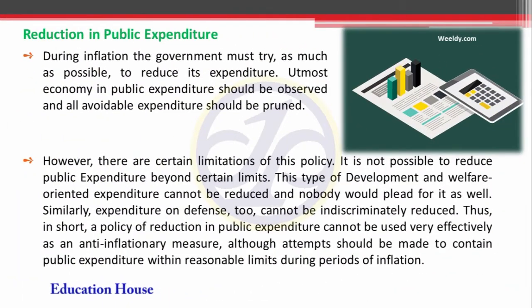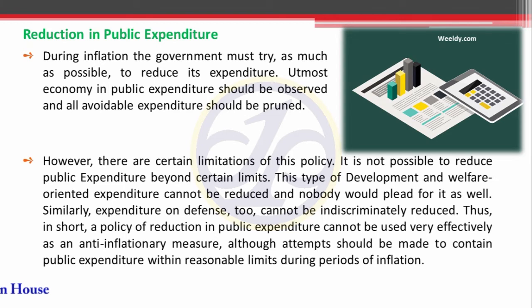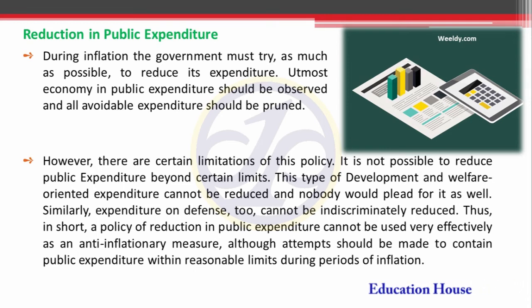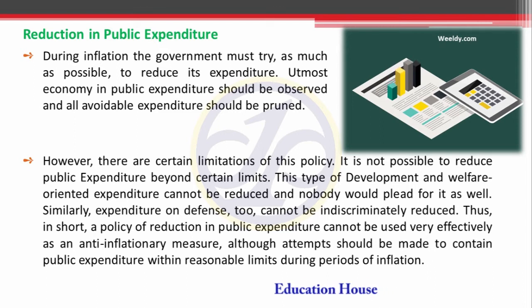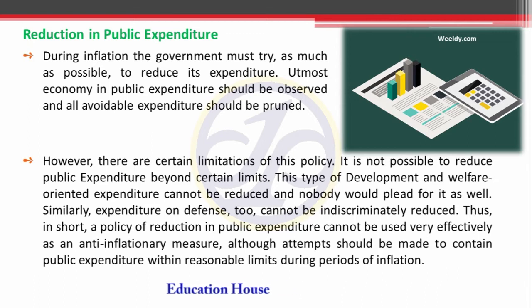Number 1: Reduction in Public Expenditure. If the government wants to reduce the situation of inflation and price rise, then they always try to reduce public expenditure. Whatever spending they have to make for infrastructure, weapons, and development-oriented purposes, they have to control. If public expenditure is stopped from the market, automatically income of the people reduces and inflation can be controlled.